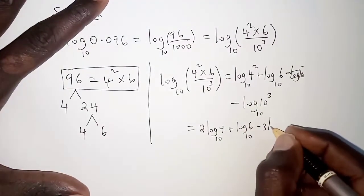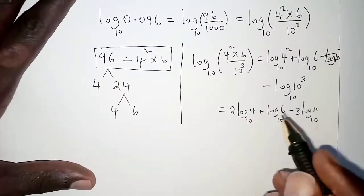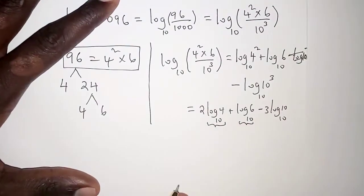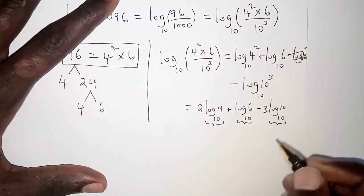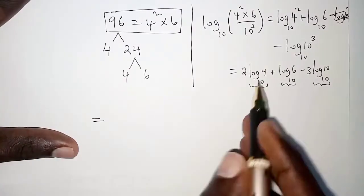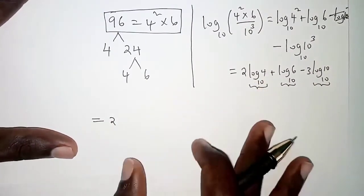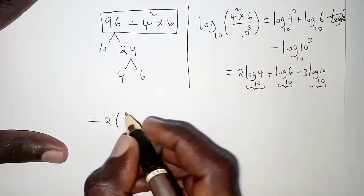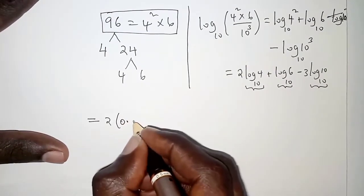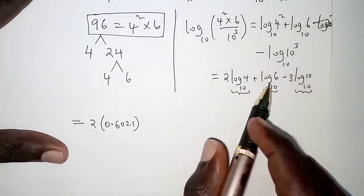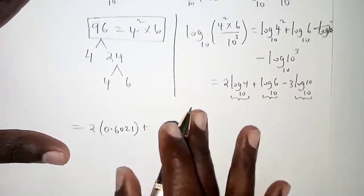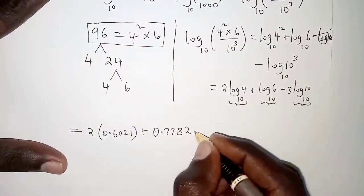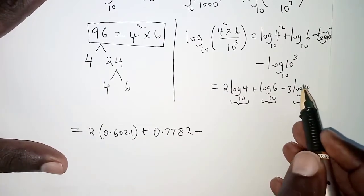In the equation we had log 4, log 6, and we know that log 10 to base 10 is just 1. So we have 2 × log 4 to base 10, which is 2(0.6021), plus log 6 which is 0.7782, minus 3 times 1, which is 3.